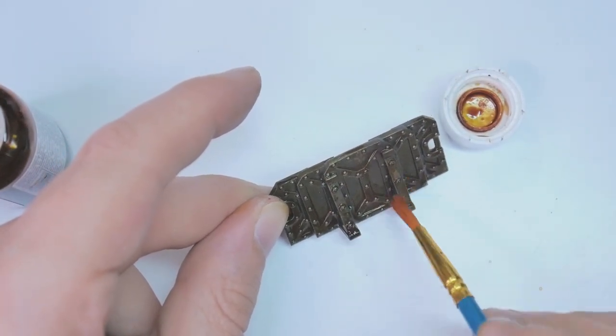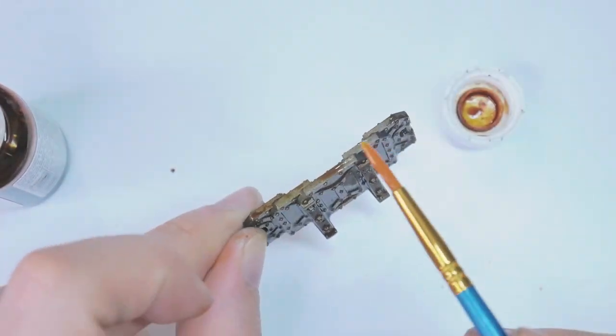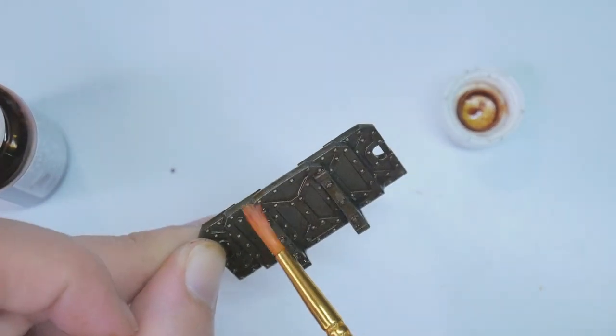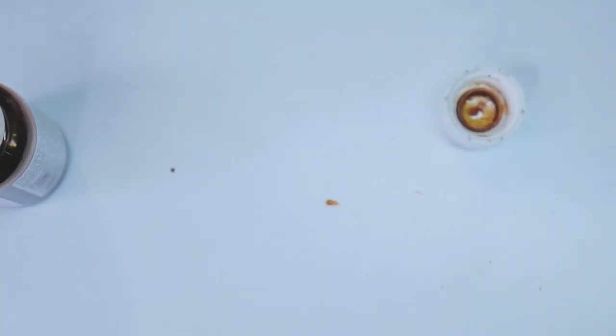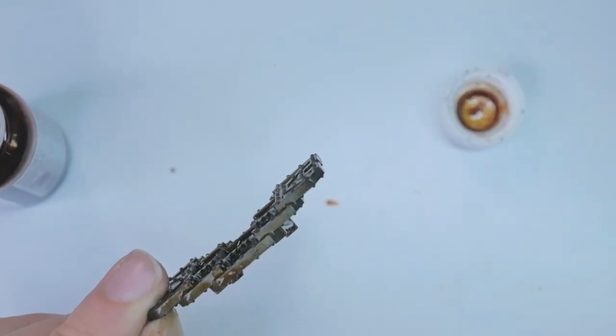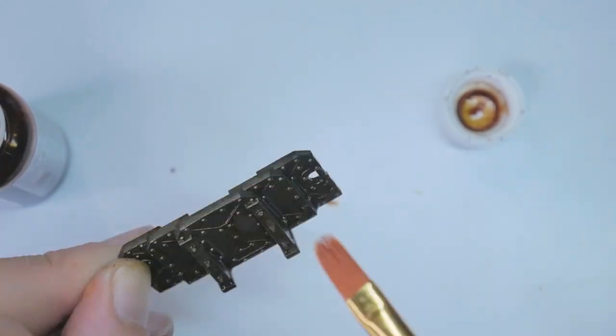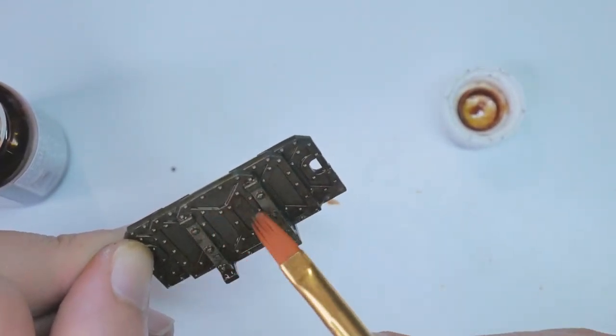I also went back and reapplied the rust to particularly recessed areas, as the product's visual effect is supposed to change with a second application. Left alone, Dirty Down is meant to dry in one to five minutes. I ended up blow drying it to allow reapplication to the deeper areas, and it worked fine.